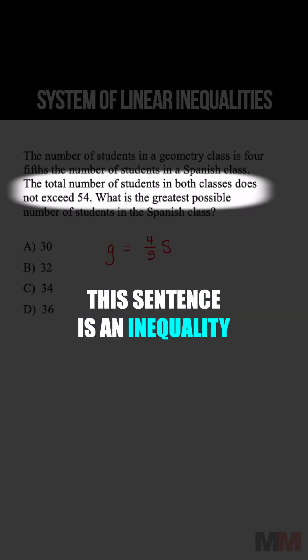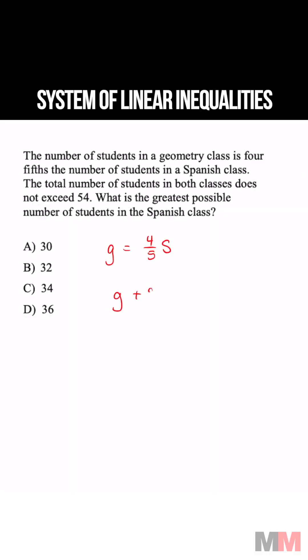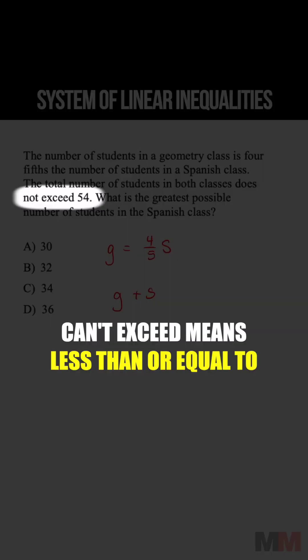The total number of students in both classes does not exceed 54, and that is an inequality: g plus s cannot exceed, meaning this expression has to be less than or equal to 54.